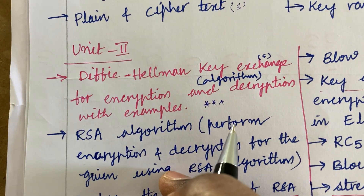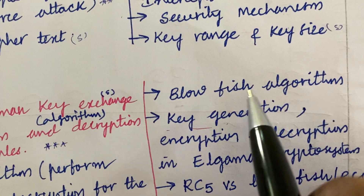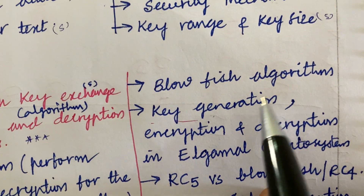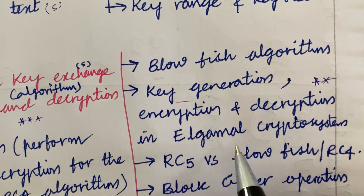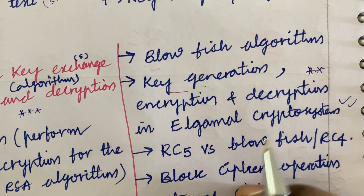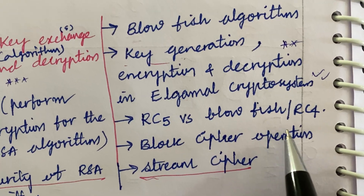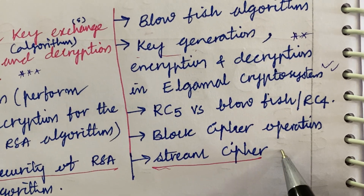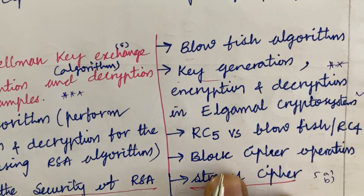This is said to be the 4A and 4B question. The 5A and 5B is all about the Blowfish algorithm — key generation, encryption, and decryption is said to be very important. The Elgamal cryptosystem is said to be a direct 10-mark question. The difference between RC5 versus Blowfish and RC4, and block cipher operational modes and stream cipher RC4, may be 5A as well as 5B questions in the question paper this time.